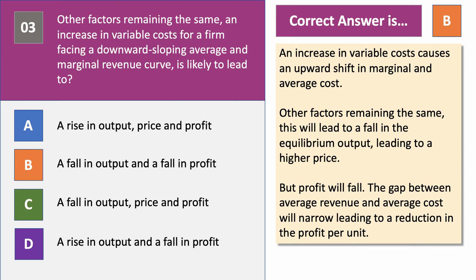A fall in output and a fall in profit. An increase in variable costs causes the marginal and average cost of production to shift upwards. Other things remaining the same — assuming demand conditions remain the same — that's going to cause the equilibrium output to fall, so the answer has to be B or C. The increase in cost will cause the firm to increase price, but profit will fall because the gap between revenue and cost per unit will narrow. Option C says a fall in output and a fall in profit, yes, but also a fall in price — the increase in cost will cause the price to go up, that's why it's not C.